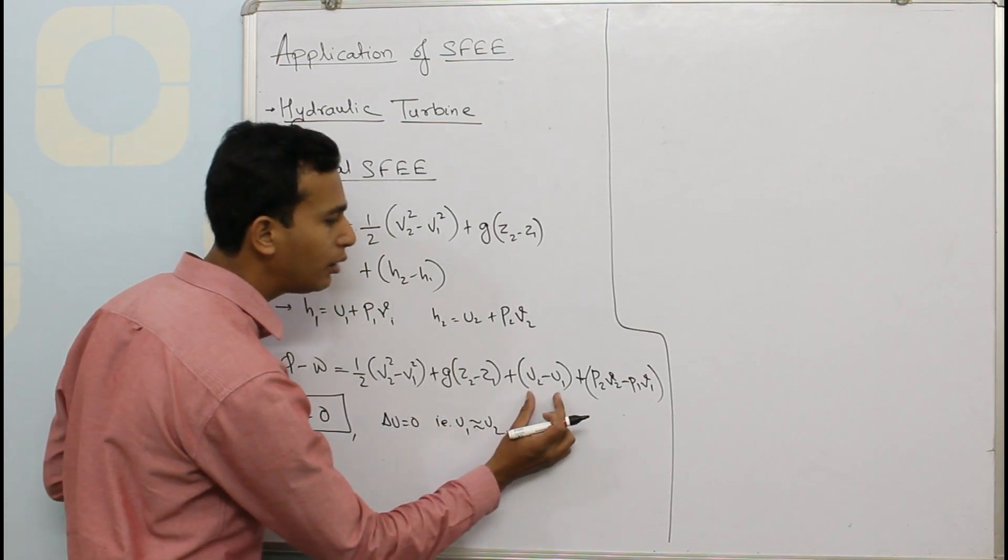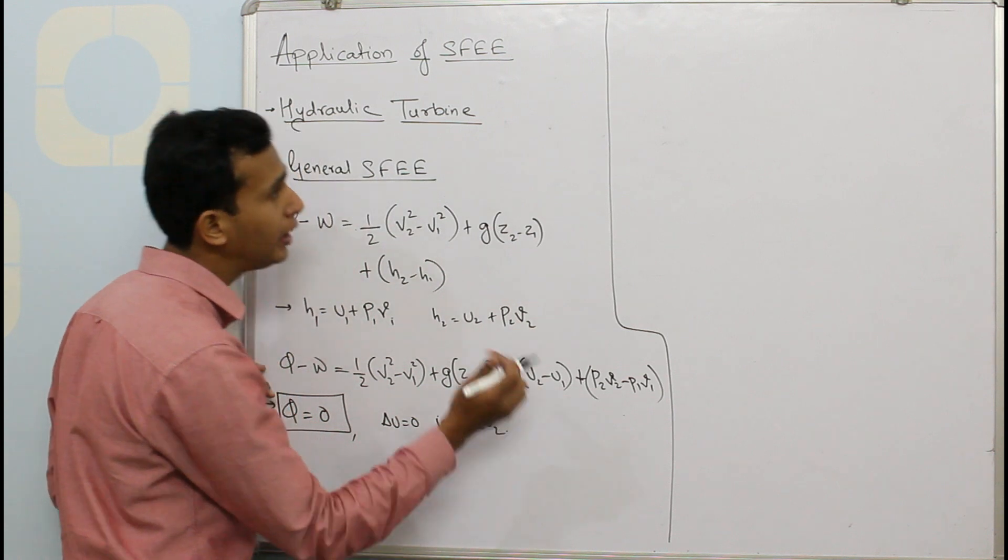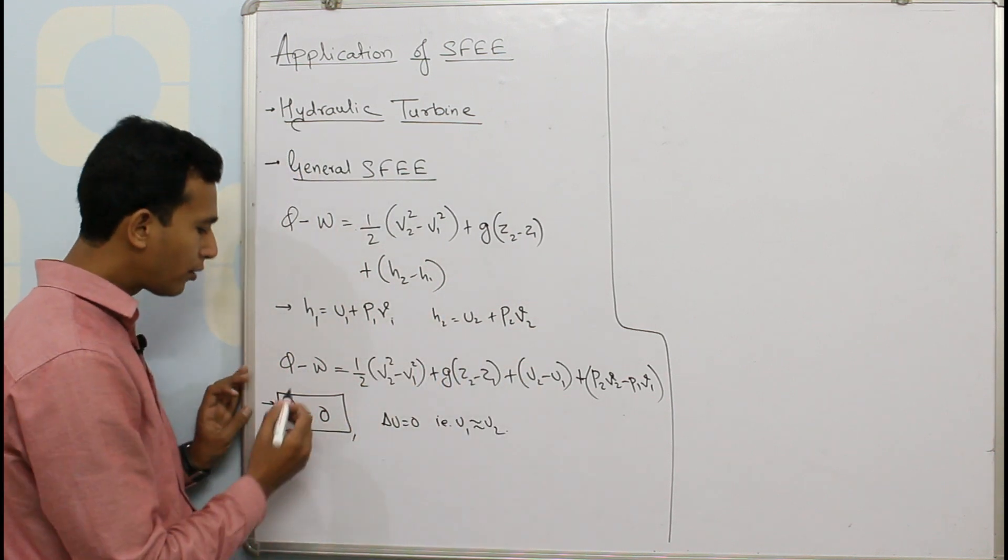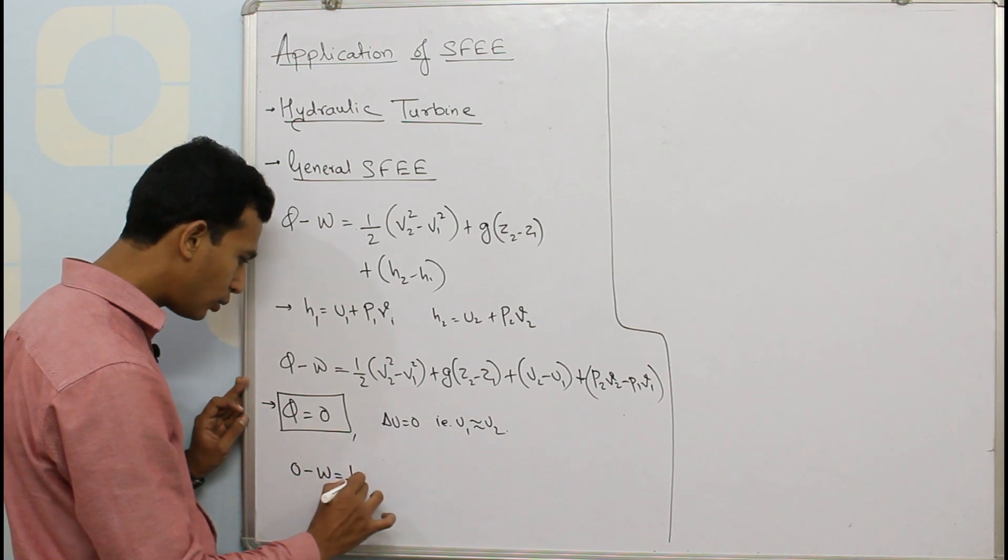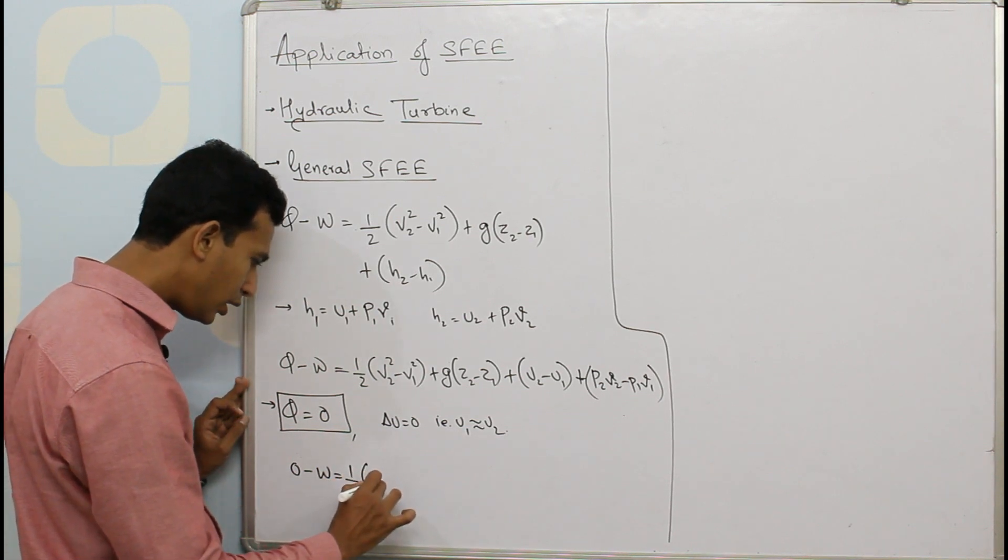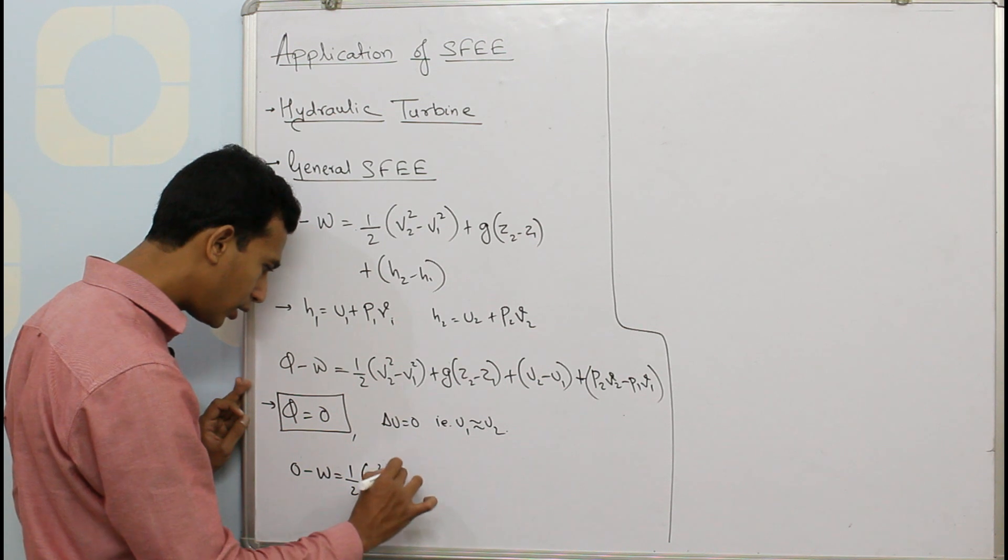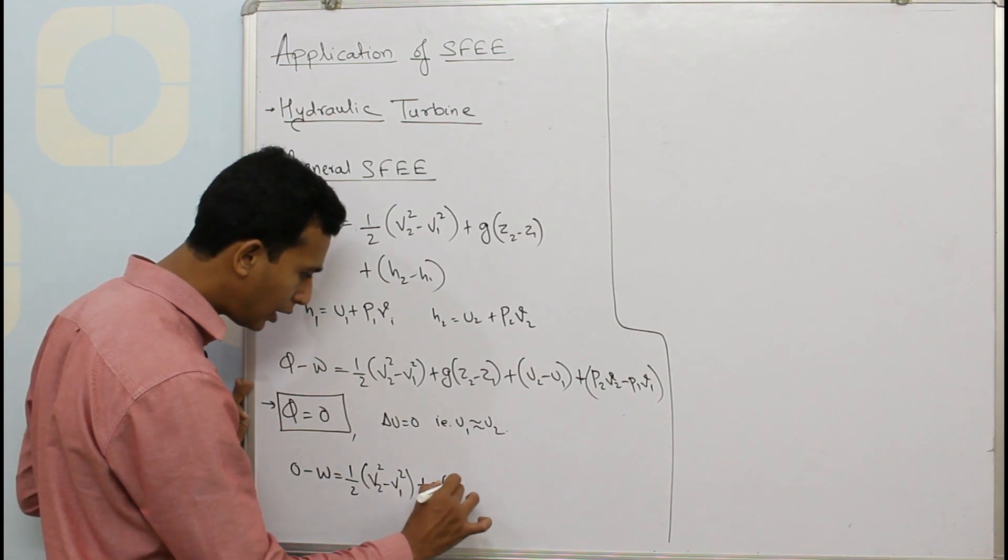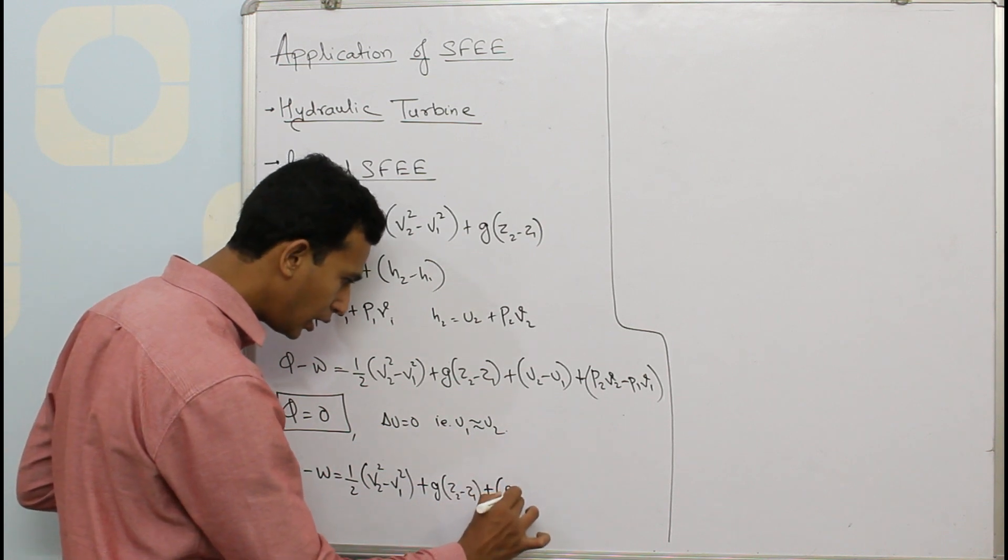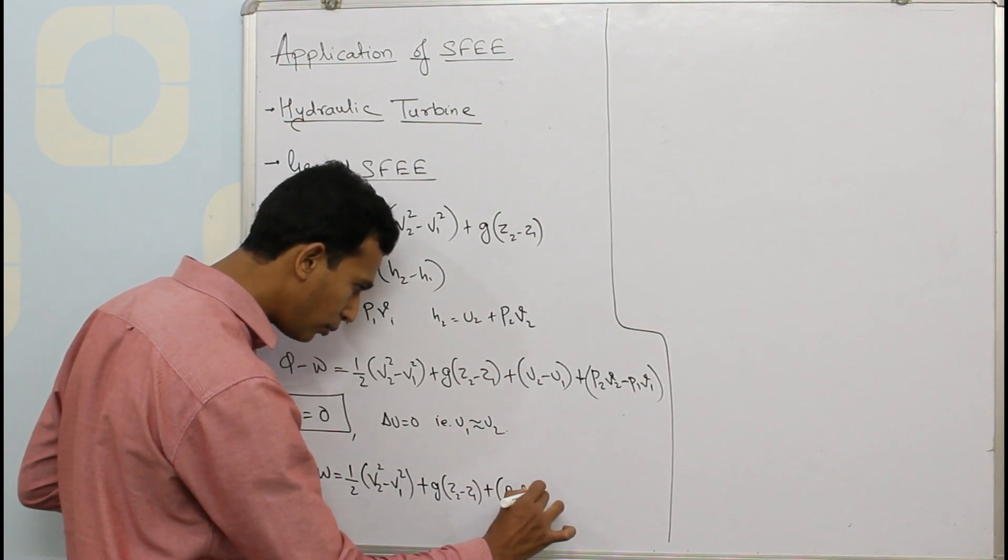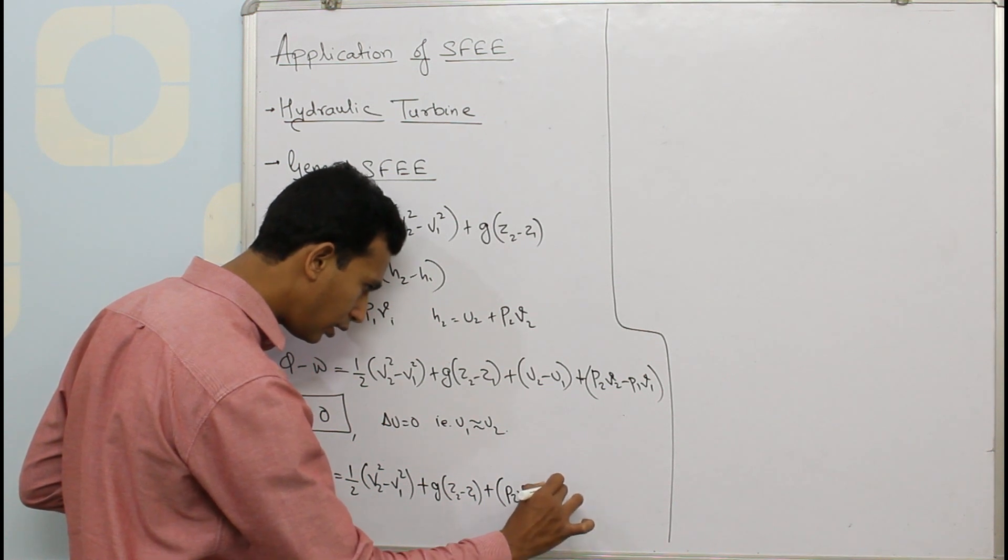So this can be neglected. Now removing all these things and writing the equation we get zero minus W equals half into bracket V2 square minus V1 square plus G into bracket Z2 minus Z1 plus in bracket P2V2 minus P1V1.